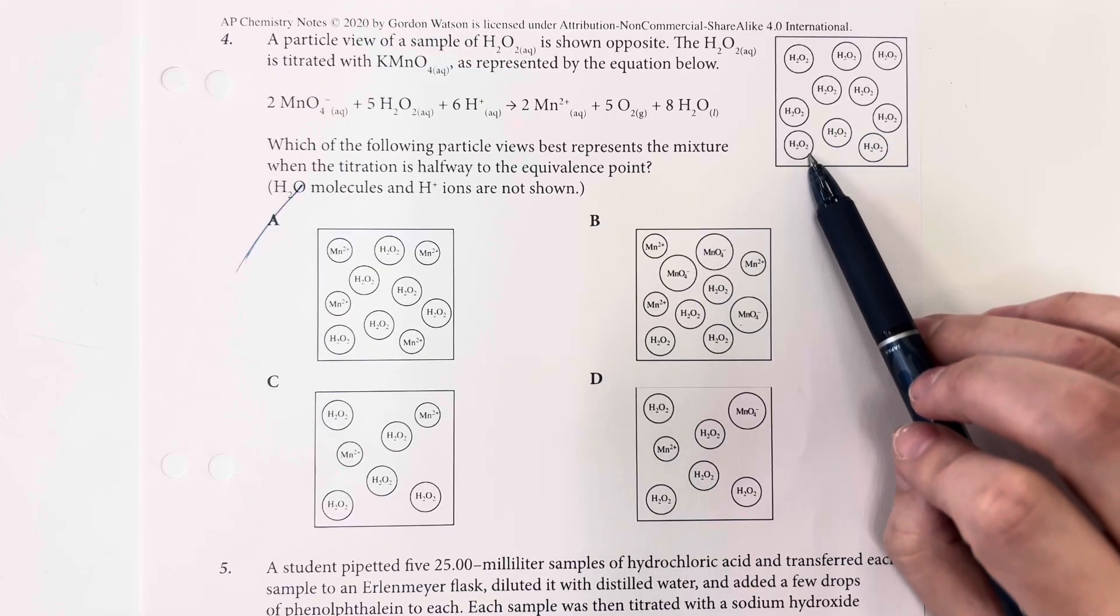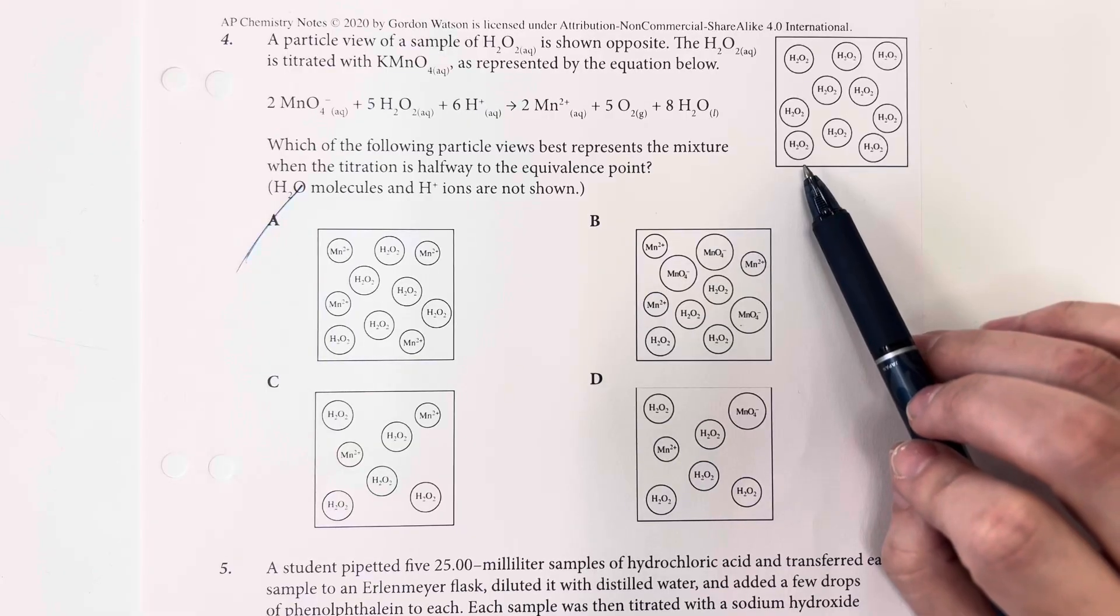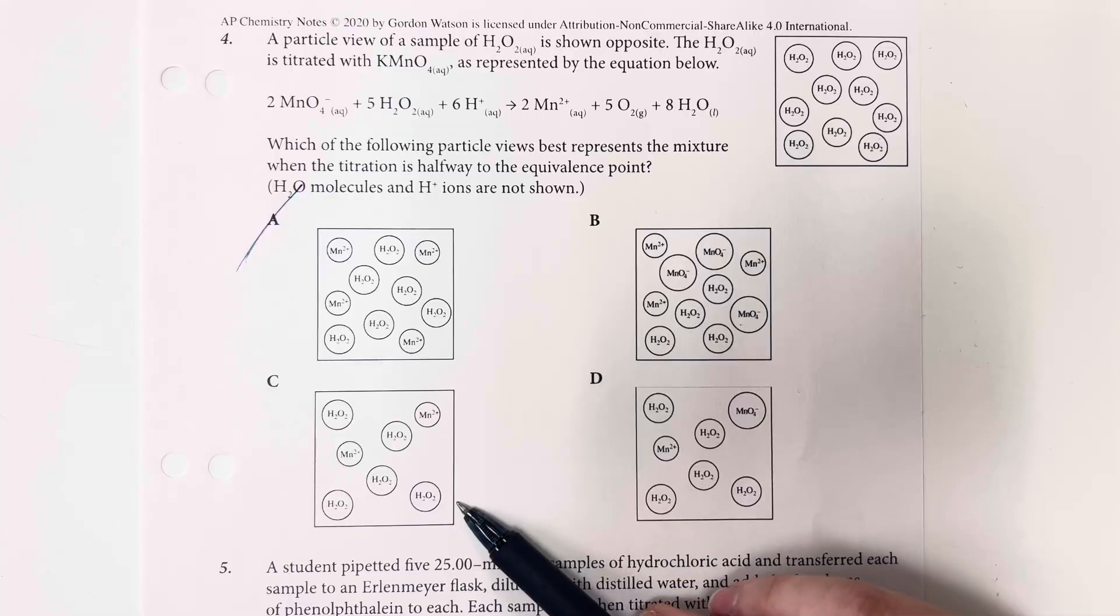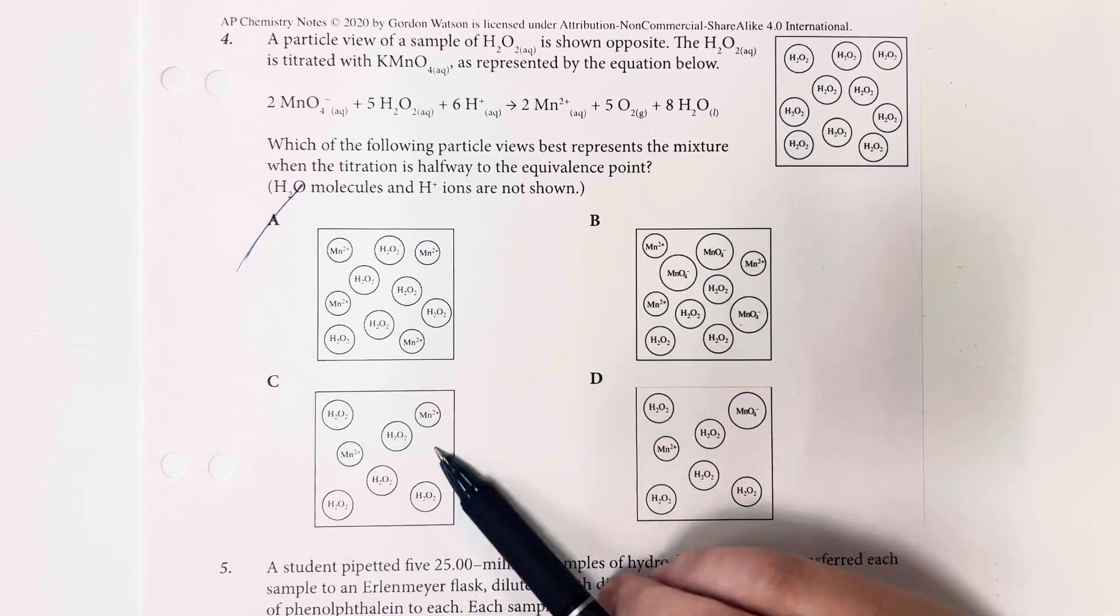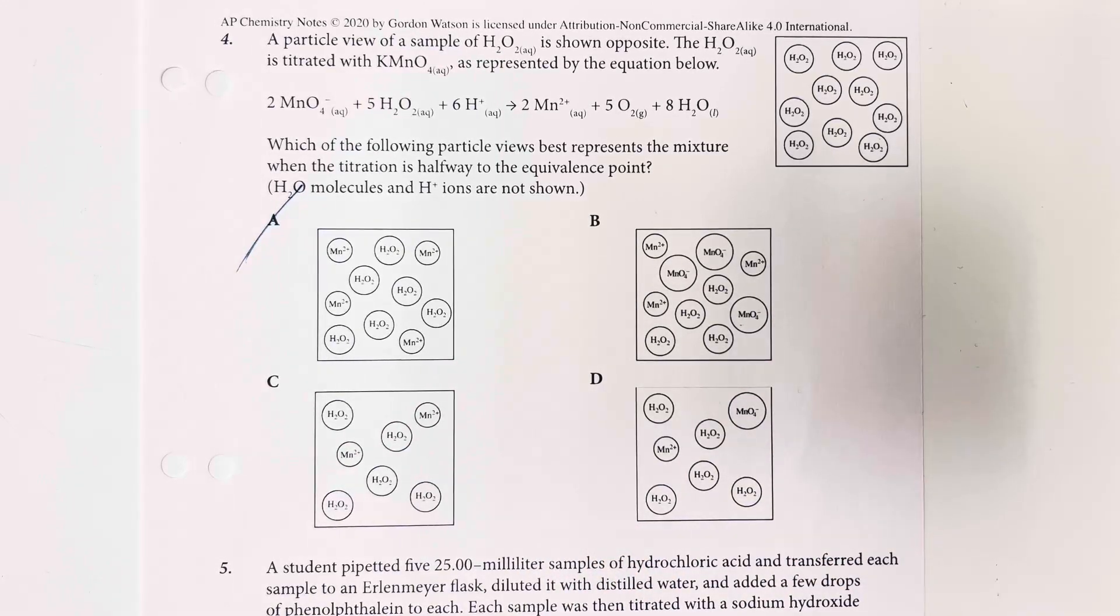if I'm halfway to equivalence point, I'm looking at about half of my peroxide should be gone. So this is a little bit less. We're starting to see the halfway here and we have our product of the manganese being present.